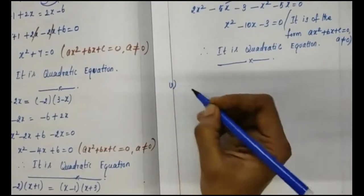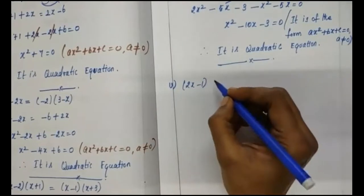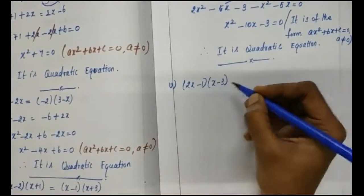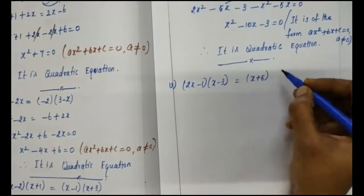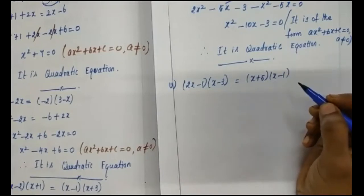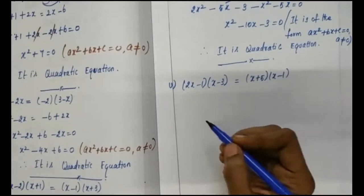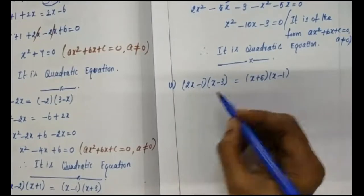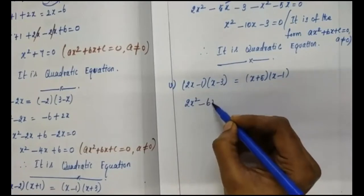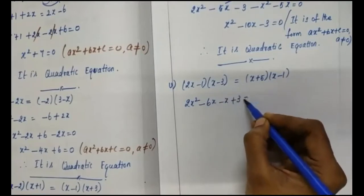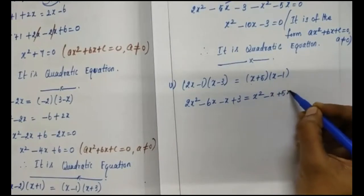Now Division 5: 2x minus 1 times x minus 3 equals x plus 5 times x minus 1. We simplify using the same procedure. Left side: 2x squared minus 6x minus x plus 3, giving 2x squared minus 7x plus 3. Right side: x squared minus x plus 5x minus 5, giving x squared plus 4x minus 5.